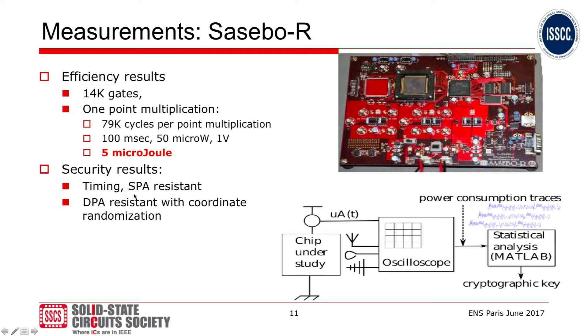For this particular example, we could do this in 14,000 gates. What's important for elliptic curve point multiplications is the time needed — in this case, close to 80,000 clock cycles. At low voltage and low clock speed, it's about 50 microwatts, and it consumes only 5 microjoules per point multiplication. Besides efficiency, we added a set of security countermeasures: the implementation is timing and simple power attack resistant, and for DPA resistance we added coordinate randomization, hence also the need for a random number generator.